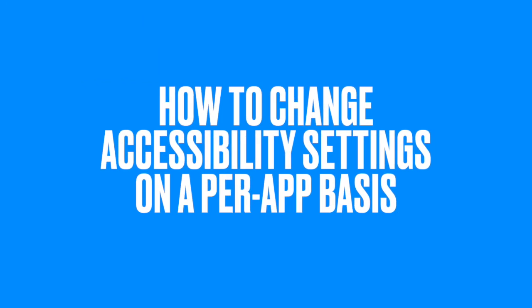Did you know that each app on your iPhone has its own accessibility settings? Not only can we set the text size for each app individually, but we can also set if we want to use button shapes, bold text, or reduce the transparency. Let's take a look at how we can set our accessibility settings for apps individually on the iPhone.